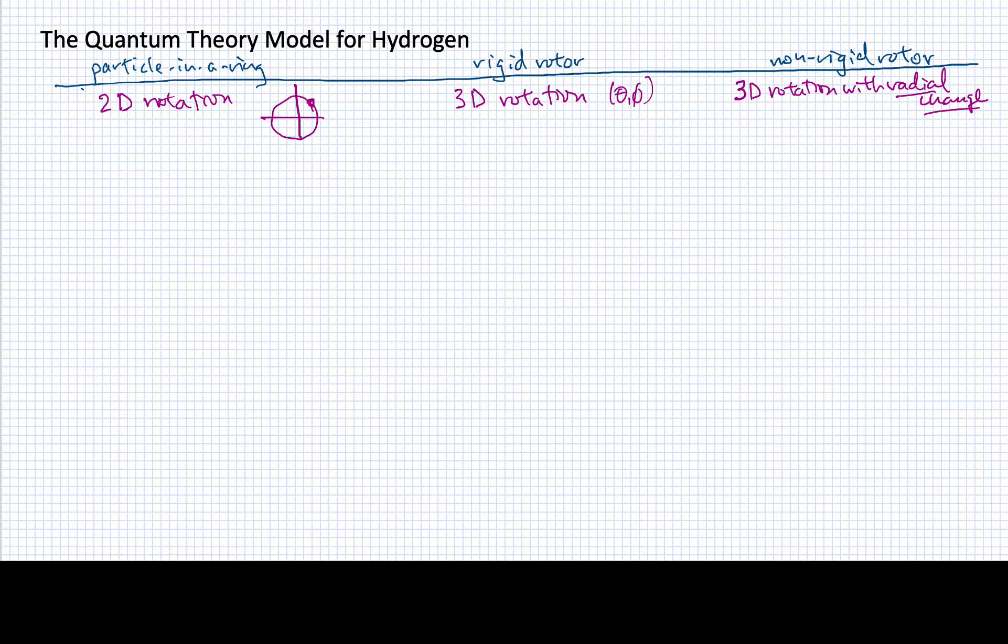It's useful to look at the Hamiltonians that correspond to these three cases. For example, in the particle in a ring case, our Hamiltonian was simply minus h-bar squared over 2i times the second derivative with respect to phi. It just had a single angular coordinate.